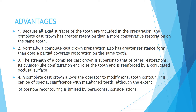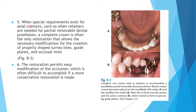A complete cast crown allows the operator to modify axial tooth contour, which is significant, and it can help us to align the teeth. When special requirements exist for axial contours — such as when retainers are needed for partial removable denture (CPD, cast partial dentures) — the complete crown is often the only restoration that allows necessary modifications.